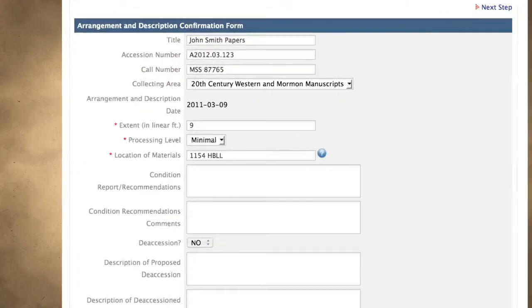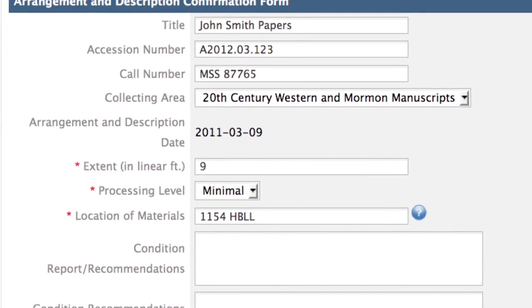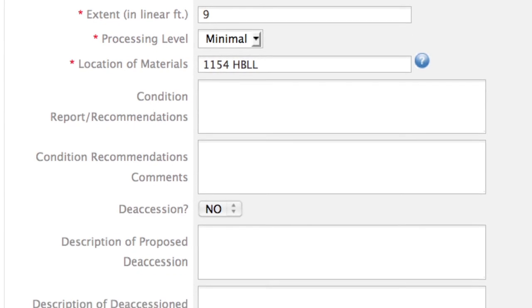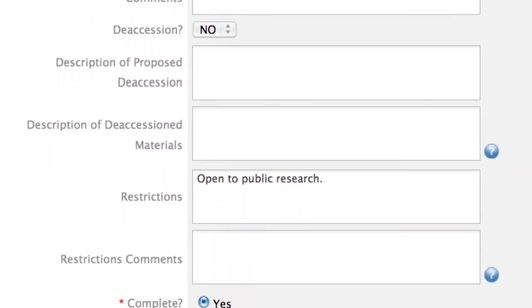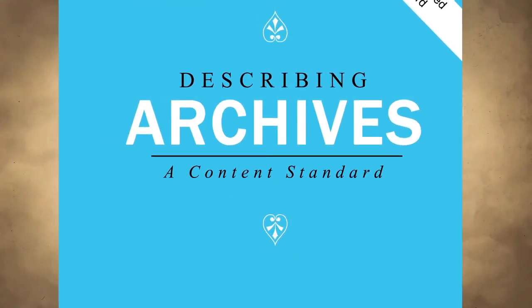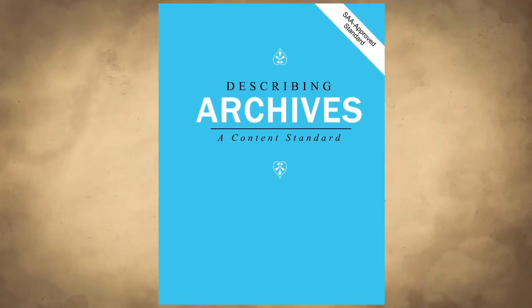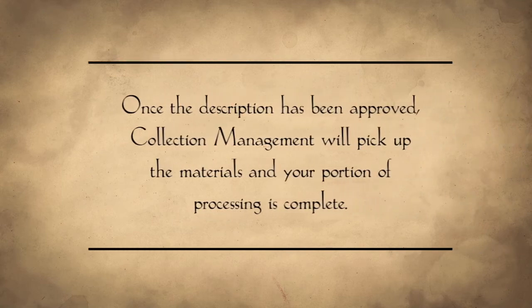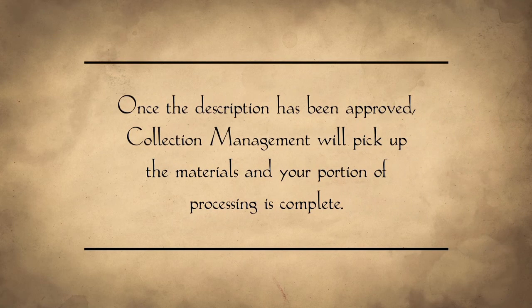Once descriptive information is entered into the Archivist Toolkit, return to ProcessMaker and complete the Arrangement and Description Confirmation Form. This will trigger a series of reviews to ensure that the descriptive information is compliant with departmental standards, including Describing Archives, a content standard. Once the description has been approved, collection management will pick up the materials and your portion of processing is complete.